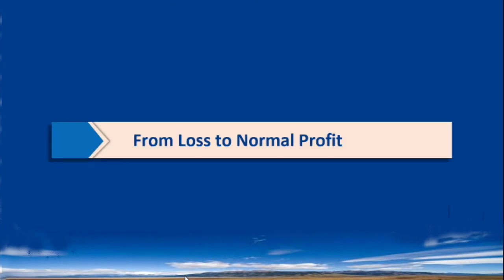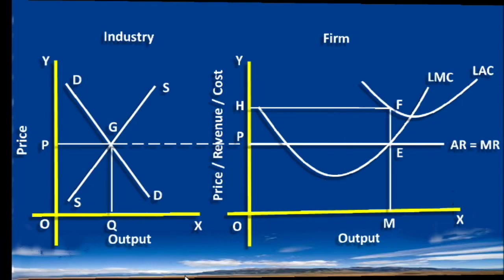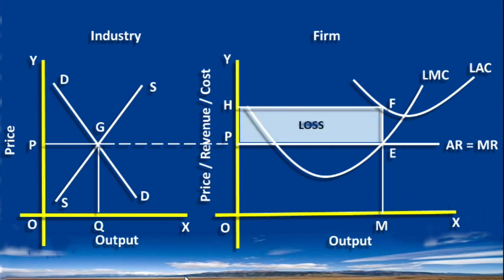We shall start from loss to normal profit — it means all the firms incur loss. Look at this graph. The left side shows industry equilibrium. The right side shows the firm equilibrium. The firm's loss is PHFE.